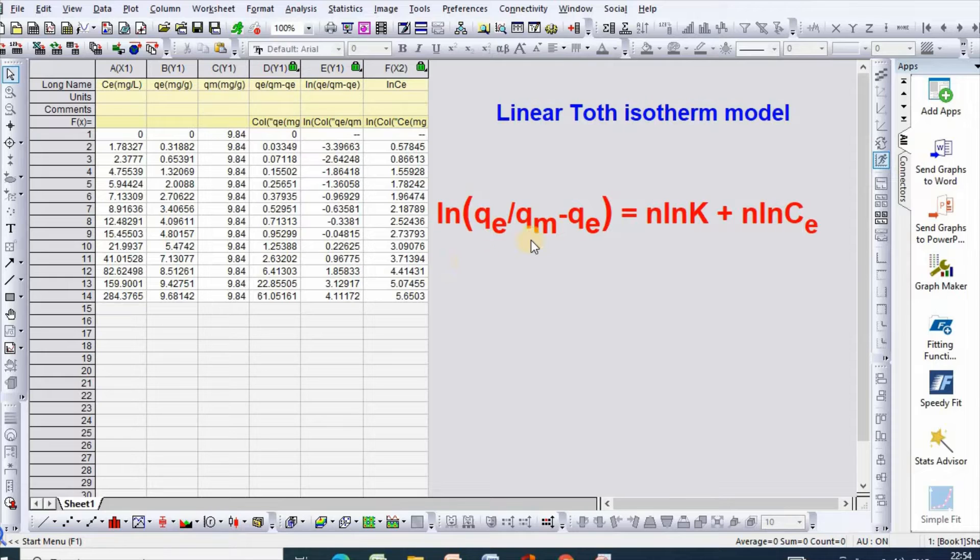Toth isotherm can be written as ln(QE/(QM-QE)) = n*ln(K) + n*ln(CE), where QE is the amount adsorbed at equilibrium.